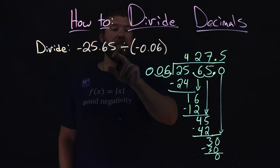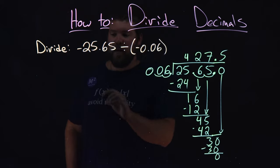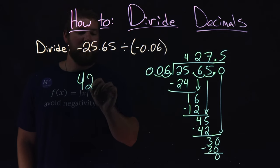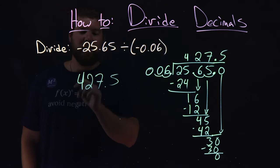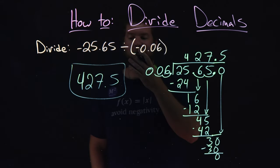And so, again, a negative divided by a negative is positive. So our answer here is 427.5. And there we have our answer.